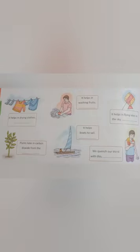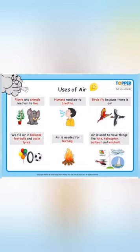Here you can see different examples: air helps to dry clothes, it helps in flying kites in the sky, it helps boats to sail. Plants take in carbon dioxide with the help of air. Air at any cost is important for us, and as humans we must protect our air properly. The uses of air include: plants and animals need air to live, humans need air to breathe, birds fly because there is air, air is needed for burning, and we fill air in balloons, footballs, and cycle tires.